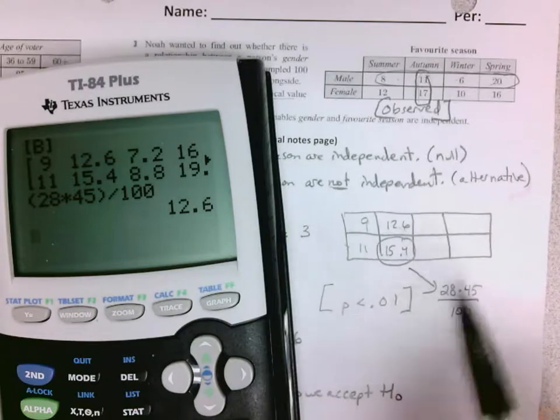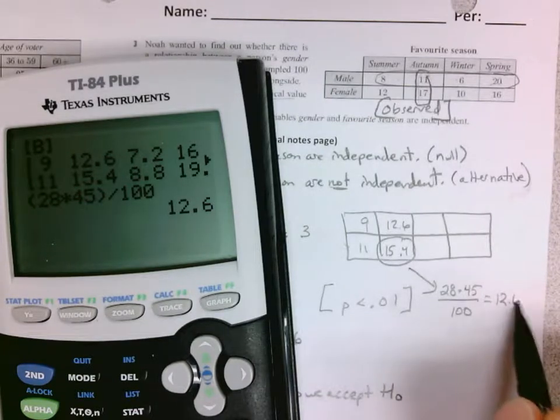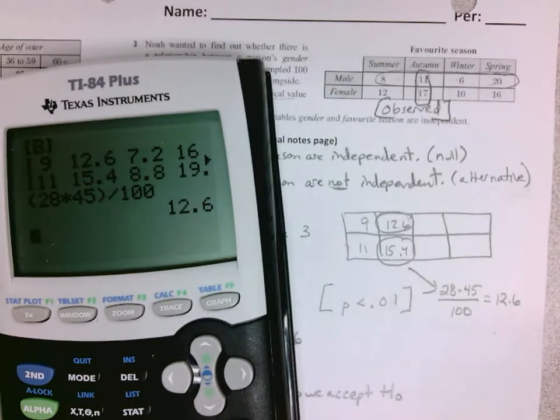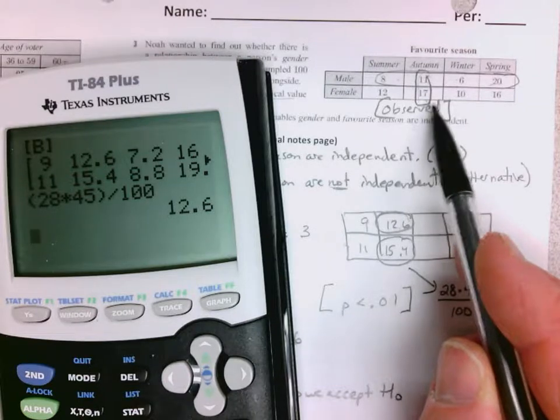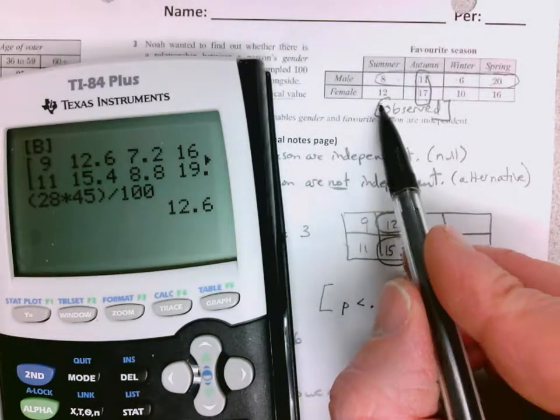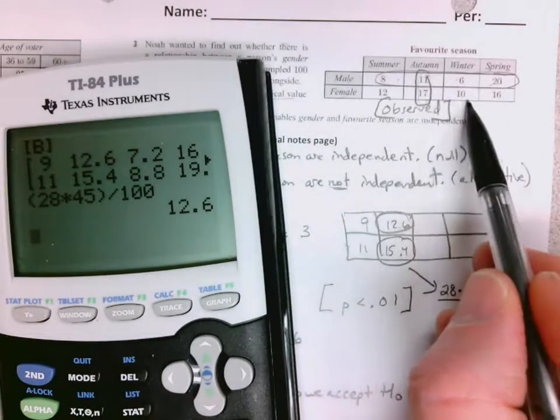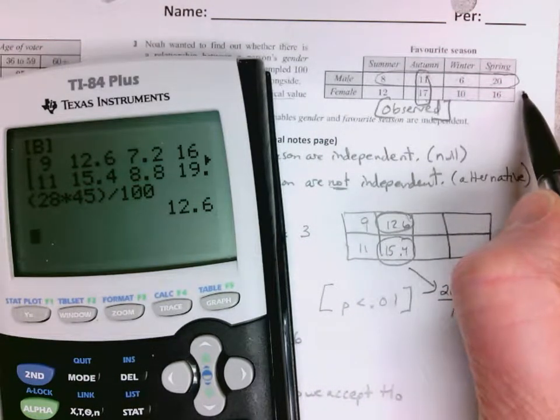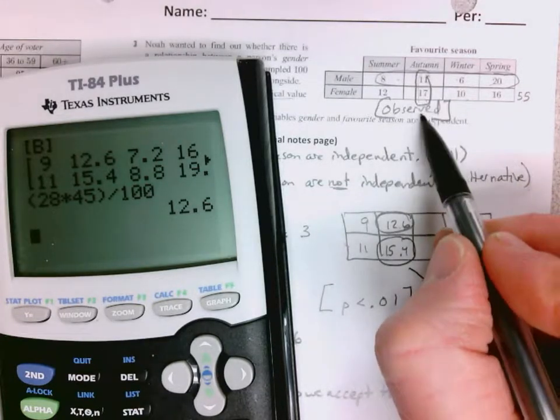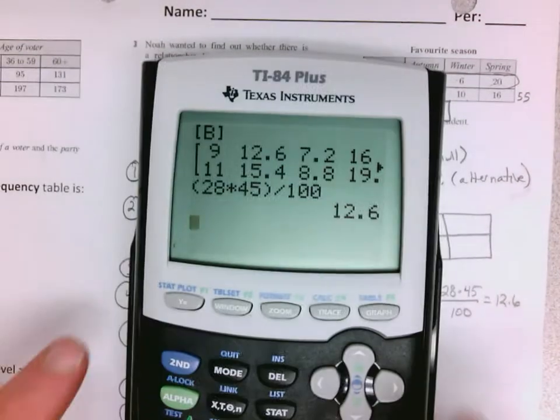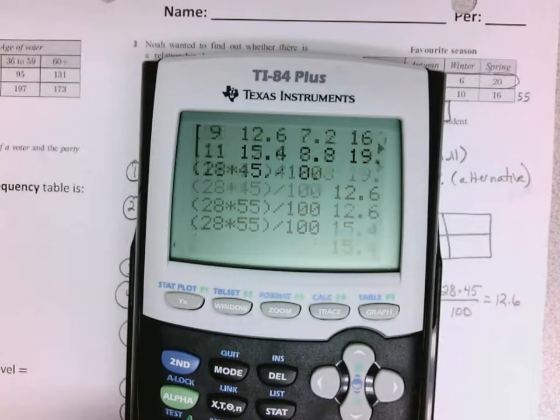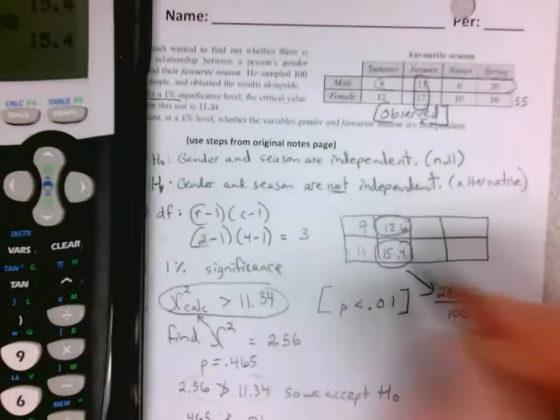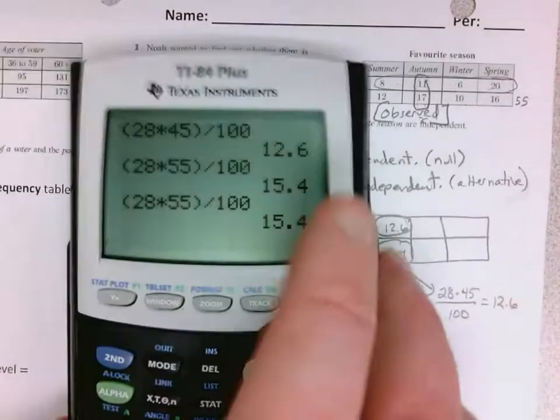So we verified this value right here. I guess I did the one right above it. If you wanted to verify the one below there, it would be the row total, 29, 39, 55, and the column total, which is 28. So similar calculation, only 55, 15.4, verified. You can always check back in your calculator to see if those match up.